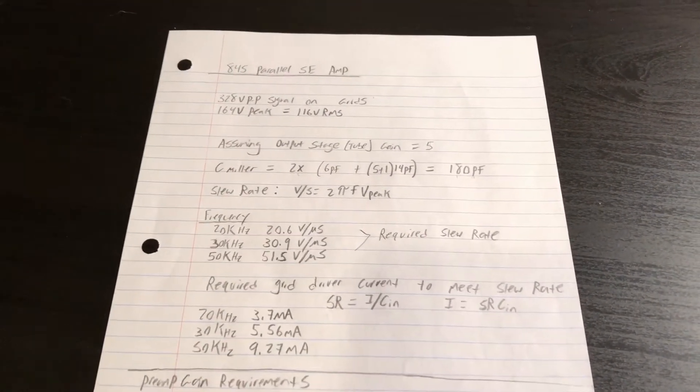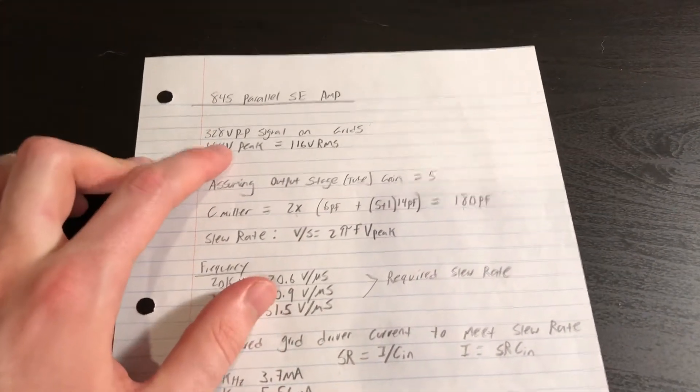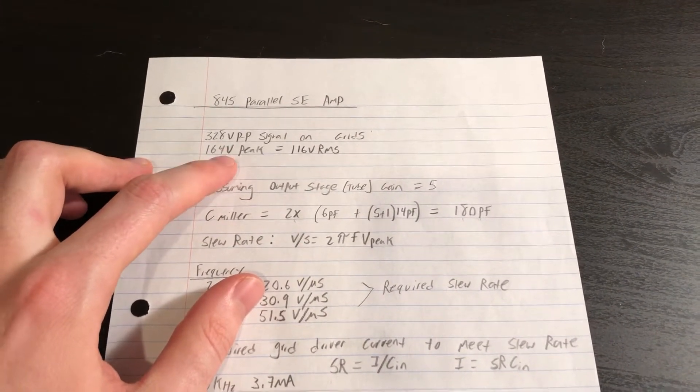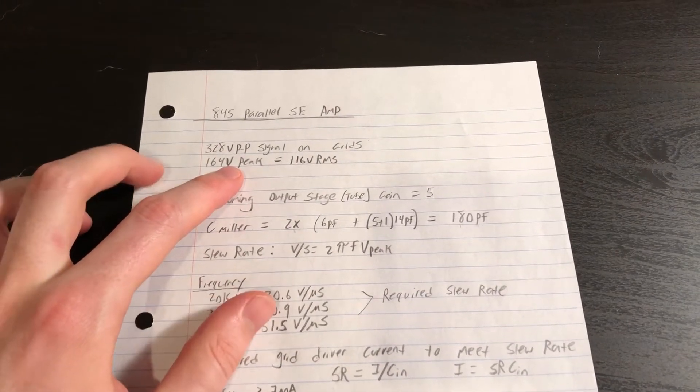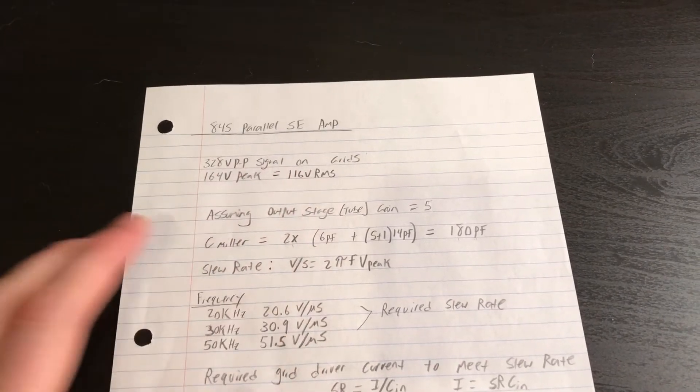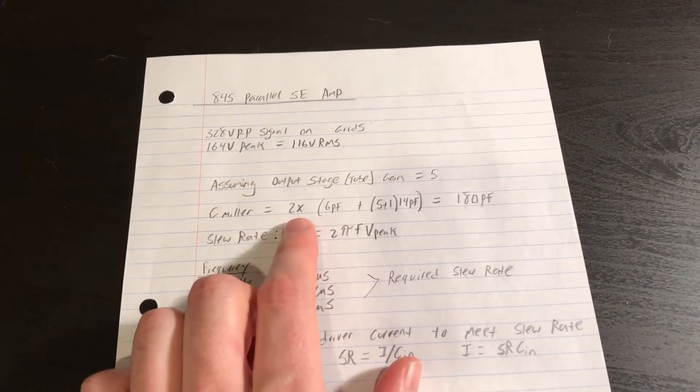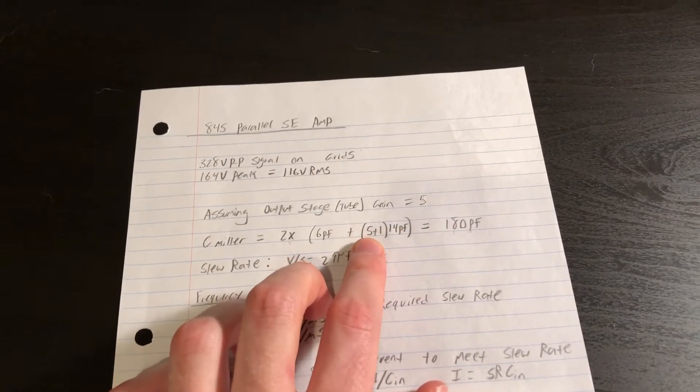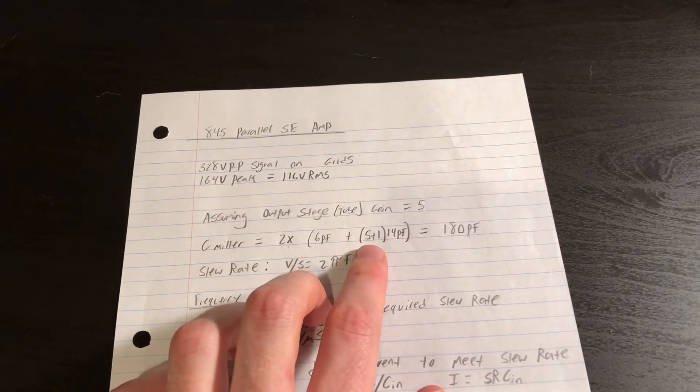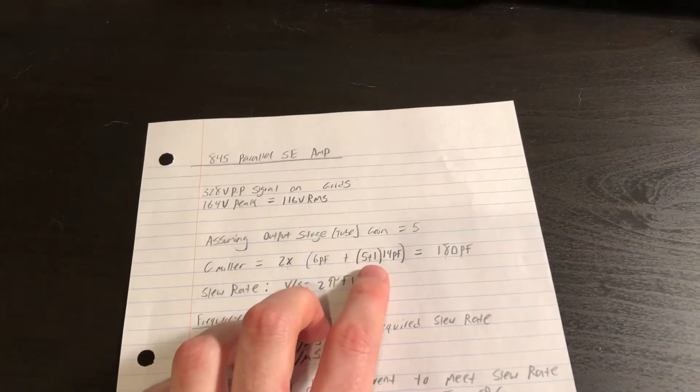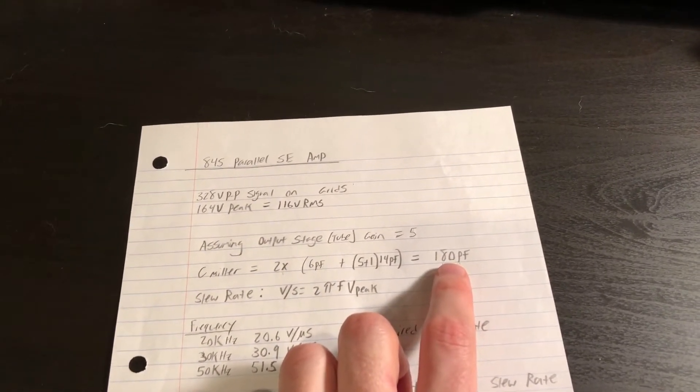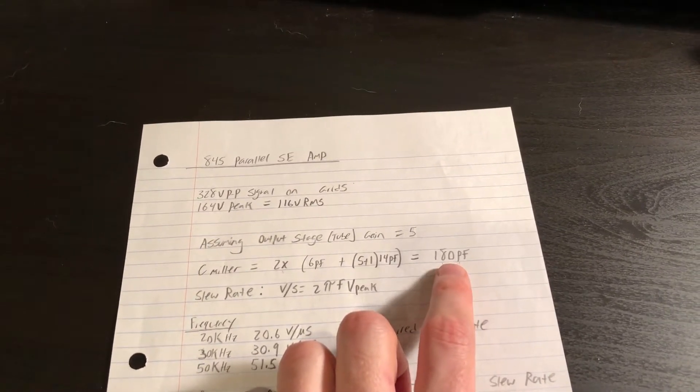One thing that you're probably aware of if you're watching this video and are familiar with 845 tubes is they are notoriously hard to drive. Based on that 8K ohm transformer impedance ratio that we're targeting, we need at least 164 volts peak on the grids of our 845s. So that's about a 116 volt RMS signal. Because we have two tubes in parallel, we have twice the input capacitance. So if we assume a gain of 5 for the amplification gain of our 845 tubes loaded with the 8K transformer, which is a reasonable assumption, the input on the grids should present around 180 picofarad load to our driver stage.